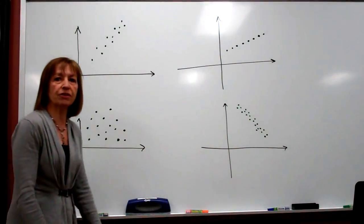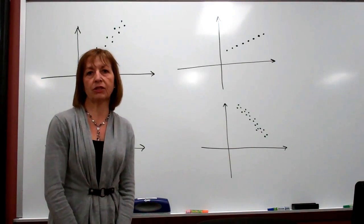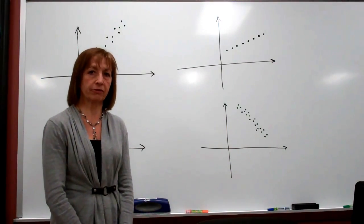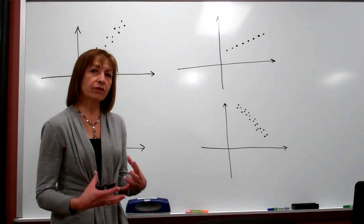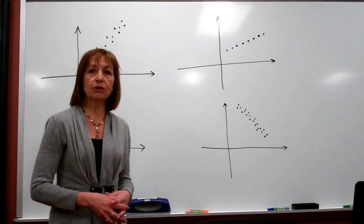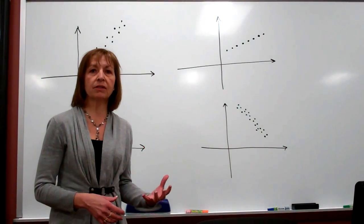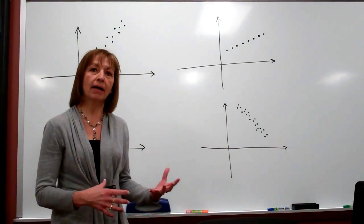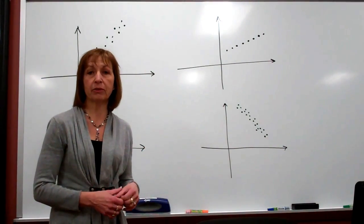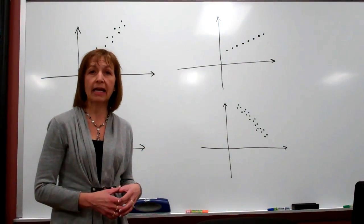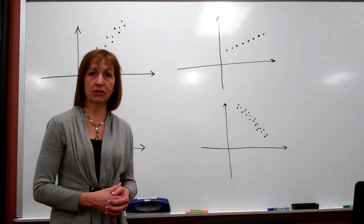Oftentimes we are interested in finding out whether there's a correlation between two different variables — some sort of an association between the two variables that would allow us to make a model of the way that the variables are acting, and then use that model to make predictions.